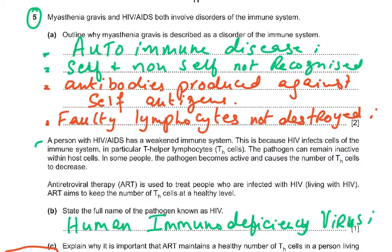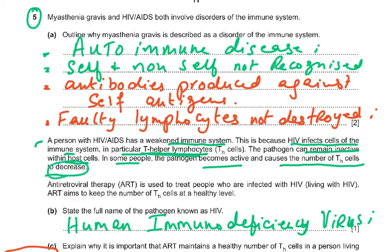A person with HIV/AIDS has a weakened immune system because HIV infects cells of the immune system, particularly T helper lymphocytes. The pathogen can remain inactive within host cells. In some people, the pathogen becomes active and causes the number of helper T lymphocytes to decrease.